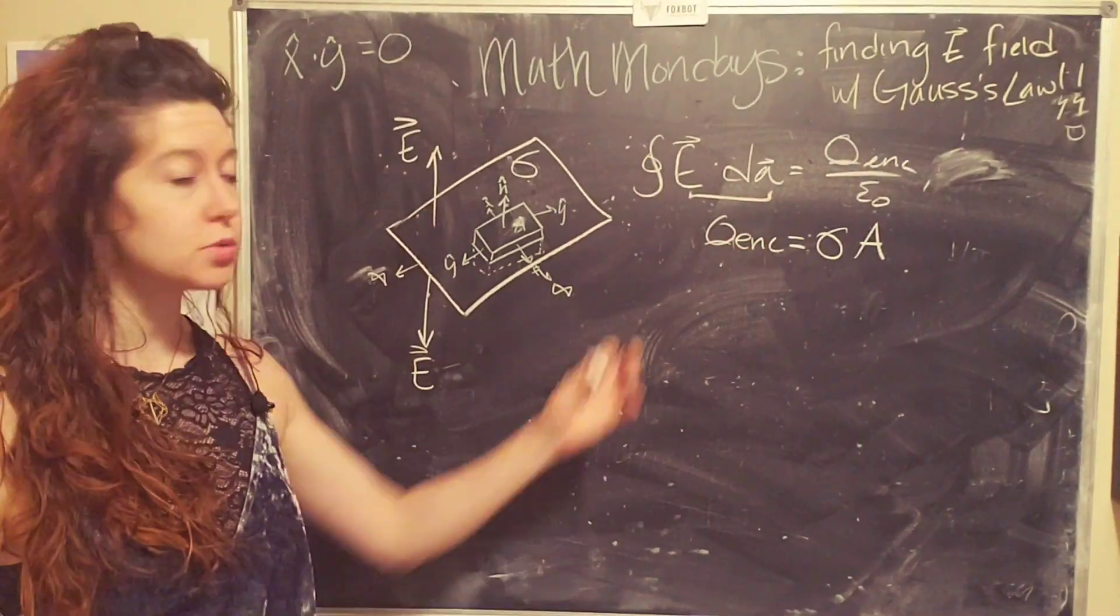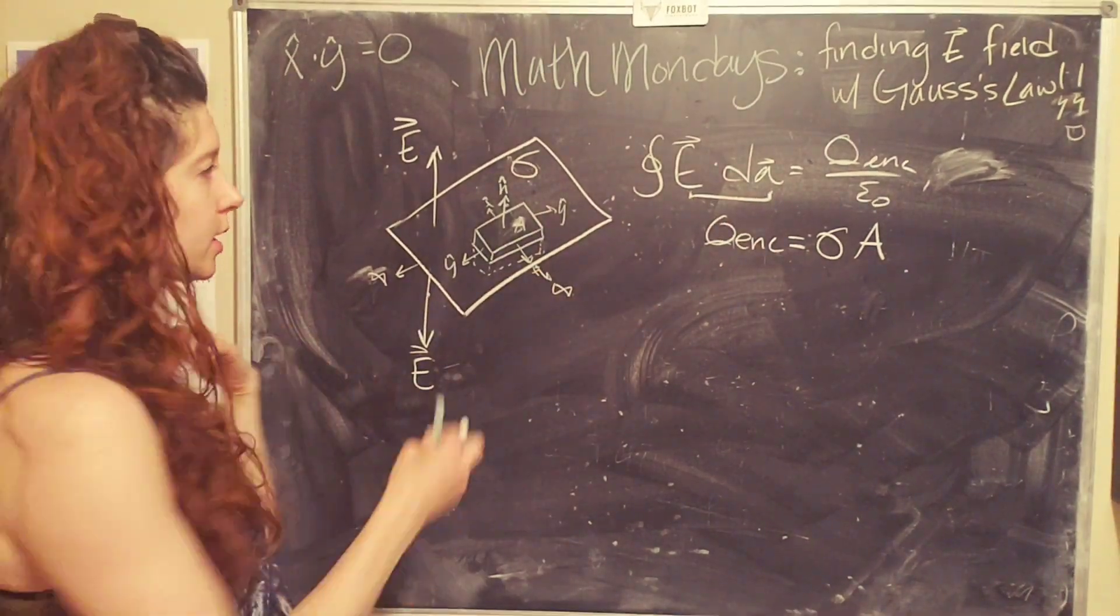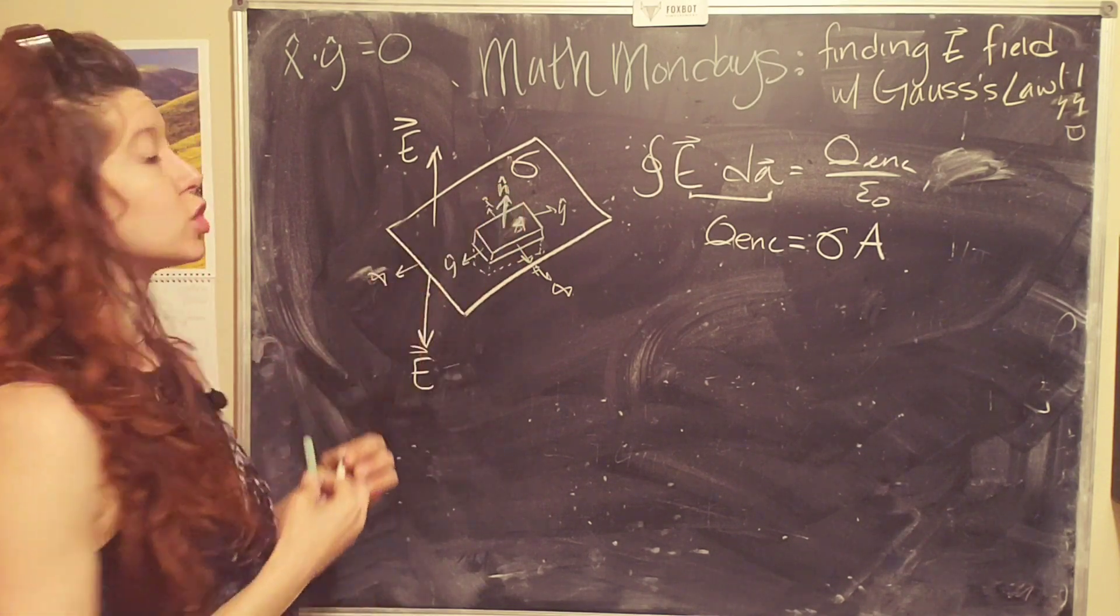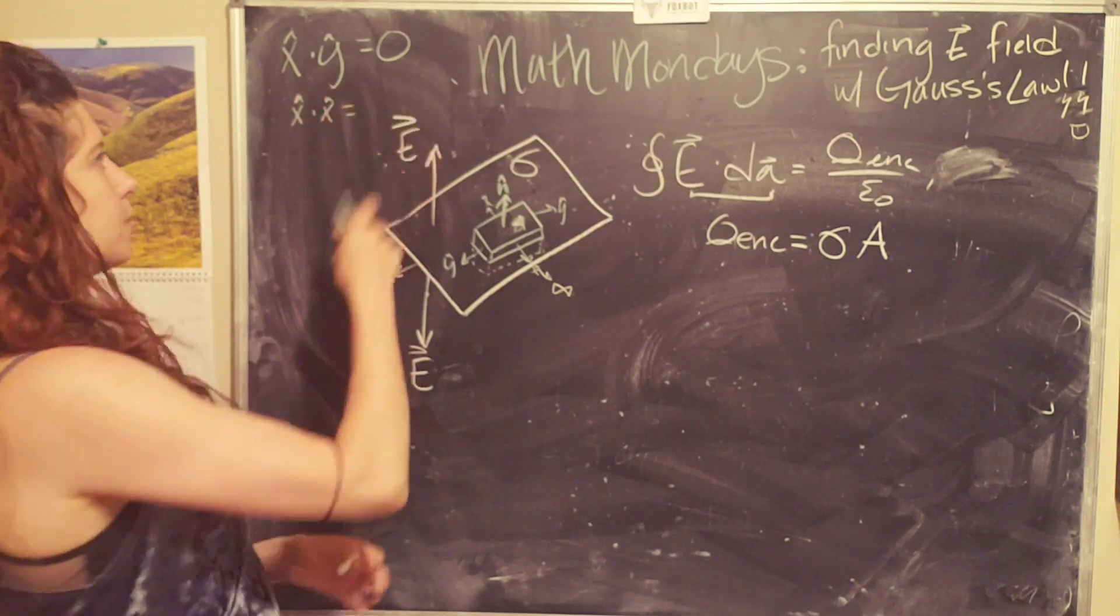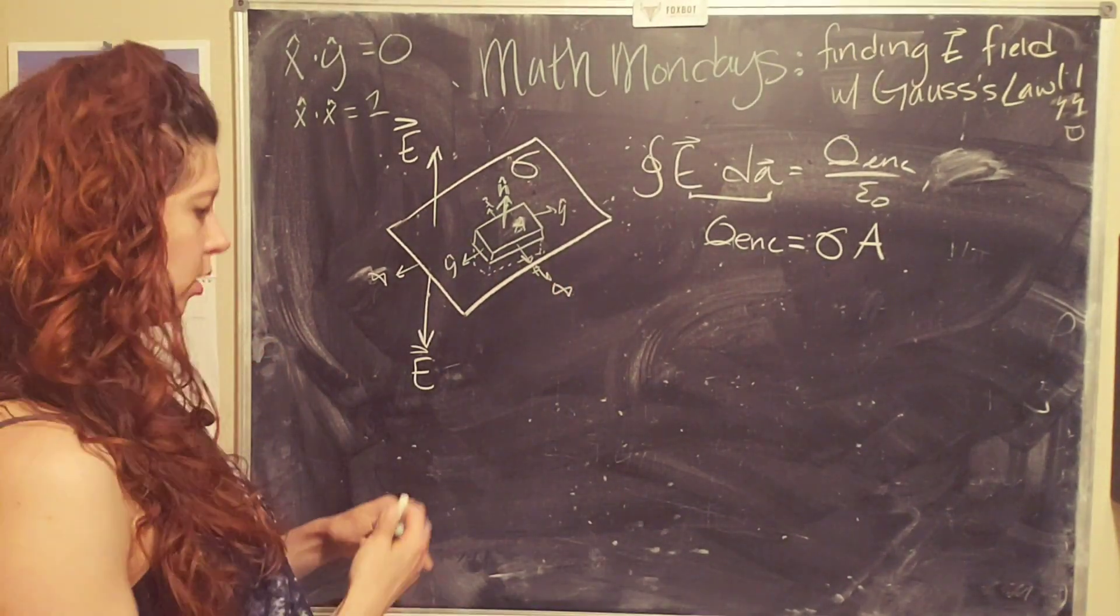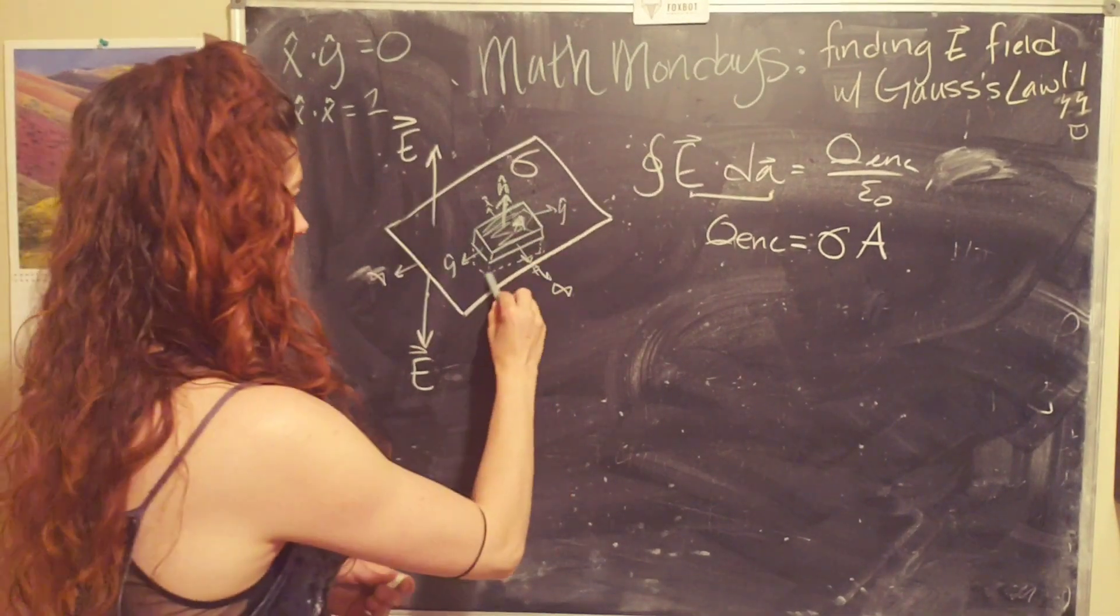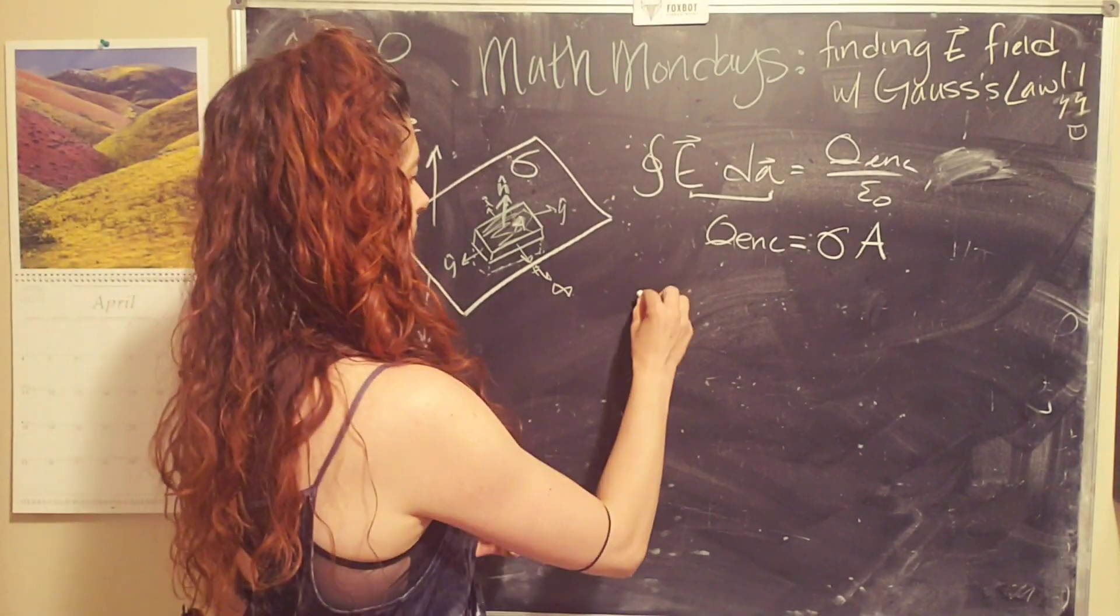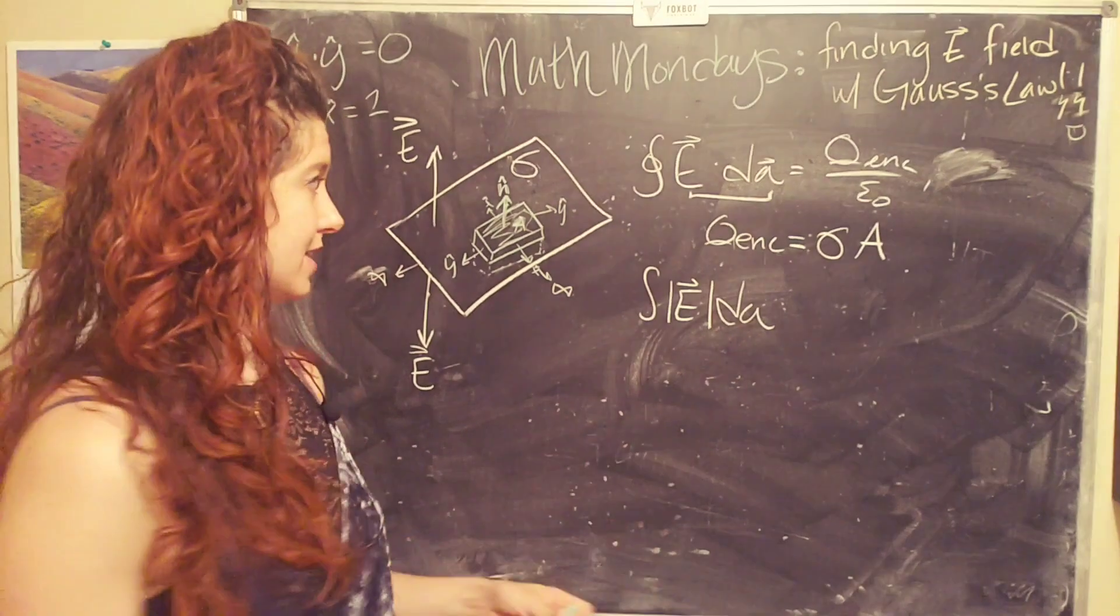So the only part of dA that contributes to this integral, basically the only thing that's going to get pulled out of the dot product is this directional vector, n hat, which is parallel to the electric field. Again, so if they're parallel, then it just equals one. So all of the other contributions of our pillbox cancel out. The only thing that we need to pay attention to is the top of the box and the bottom of the box. The sides don't contribute because the dot product goes to zero.